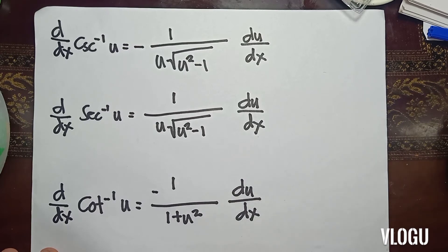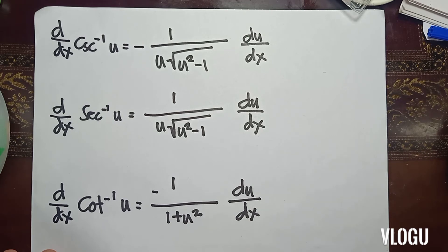The derivative of inverse secant of u is equal to 1 over u times the square root of u squared minus 1, times du/dx. The derivative of inverse cosecant of u is negative 1 over u times the square root of u squared minus 1, times du/dx. And the derivative of inverse cotangent of u is equivalent to negative 1 over 1 plus u squared, times du/dx.